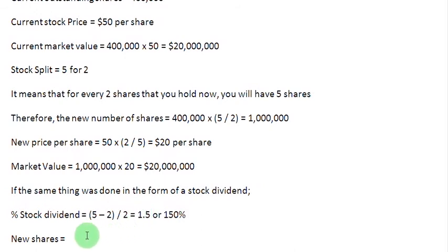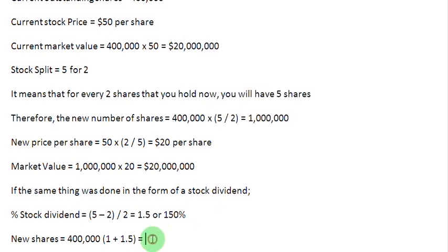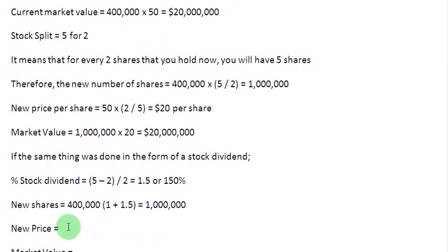So what is going to be the new number of shares? We start as before with the old shares of 400,000 and multiply by 1 plus 1.5, which gives us 400,000 times 2.5. That gives us again 1 million shares — 1 million is the new number of shares.